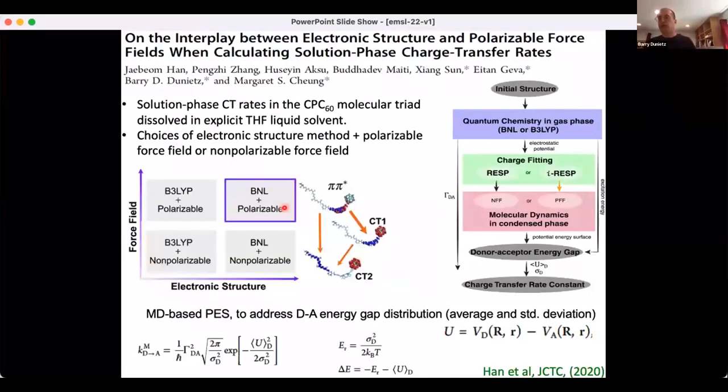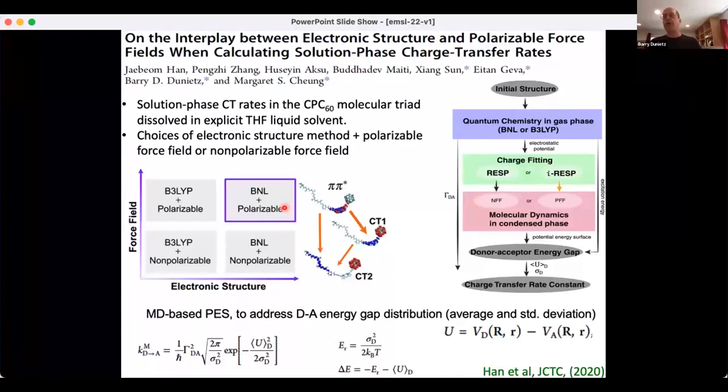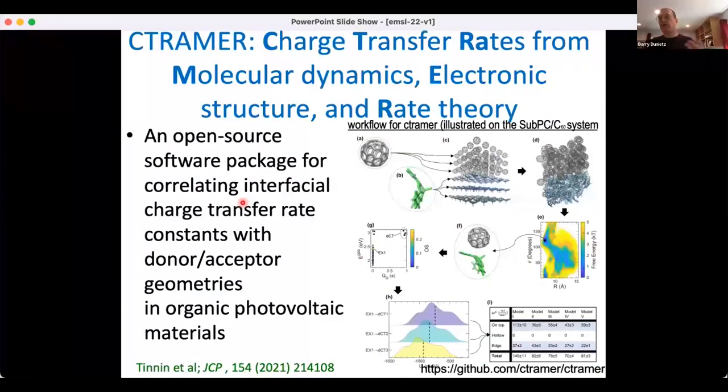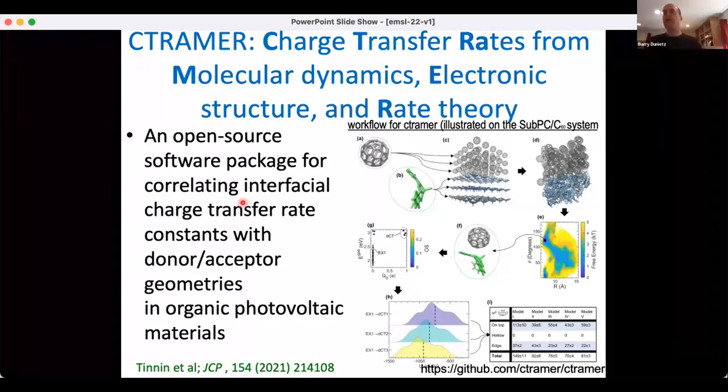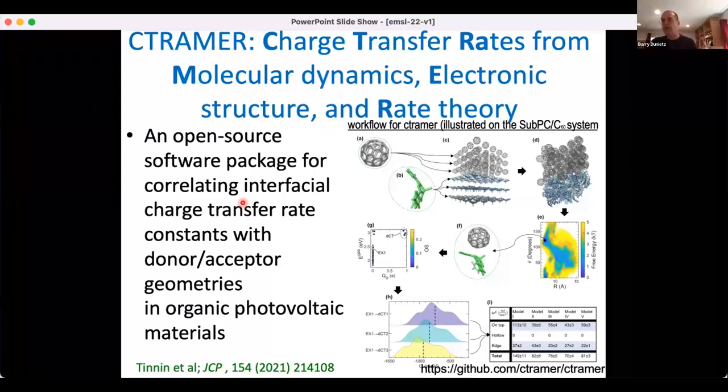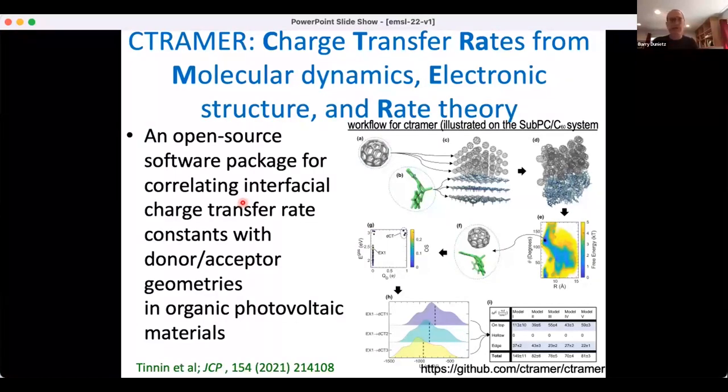We've considered different combinations of sampling the molecular system by polarizable force field versus typical force fields and different levels of density functional theory, highlighting the importance of the functional. We get the best agreements with experimental measurements with this functional and combination of polarizable force fields. I'll finish here by providing some kind of advertisement to a tool we've provided on GitHub in collaboration with Geva and Margaret, where we automate the process of calculating the rates at interfacial molecular systems.